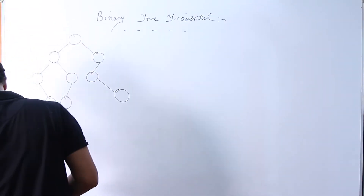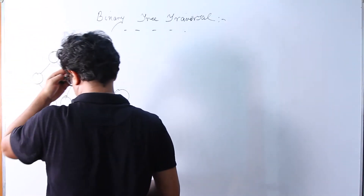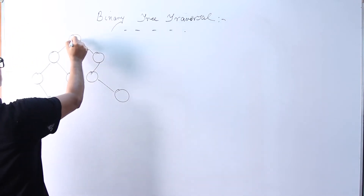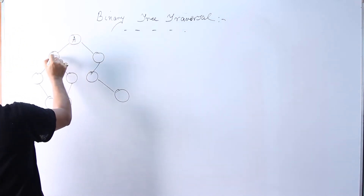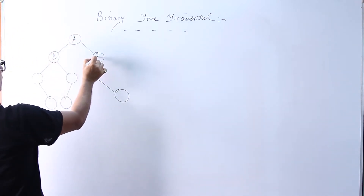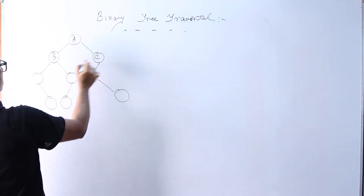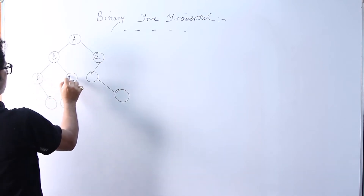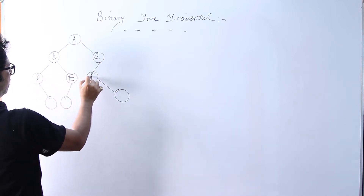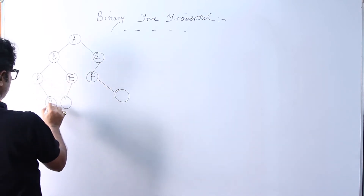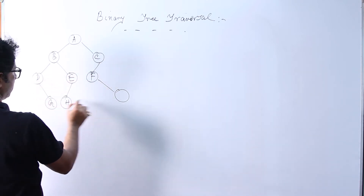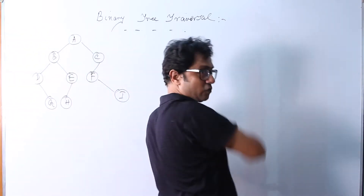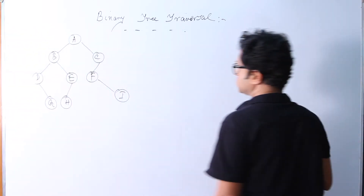Suppose the binary tree looks like this — we have elements with data values a, b, c, d, e, f, g, h, i. This is a binary tree, which as you know contains a maximum of two children at any node of the tree.